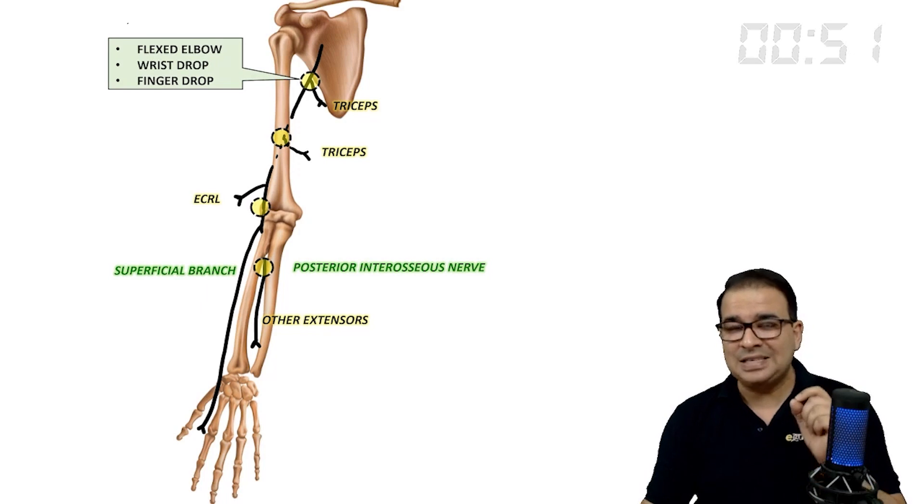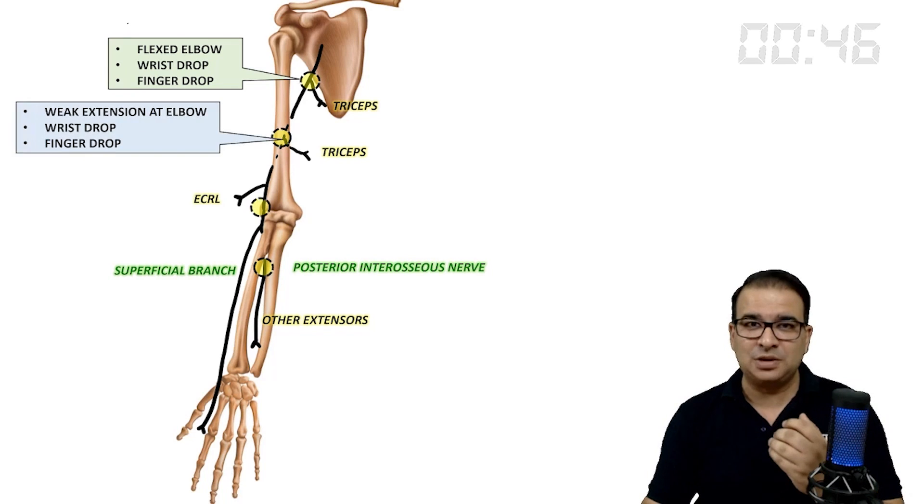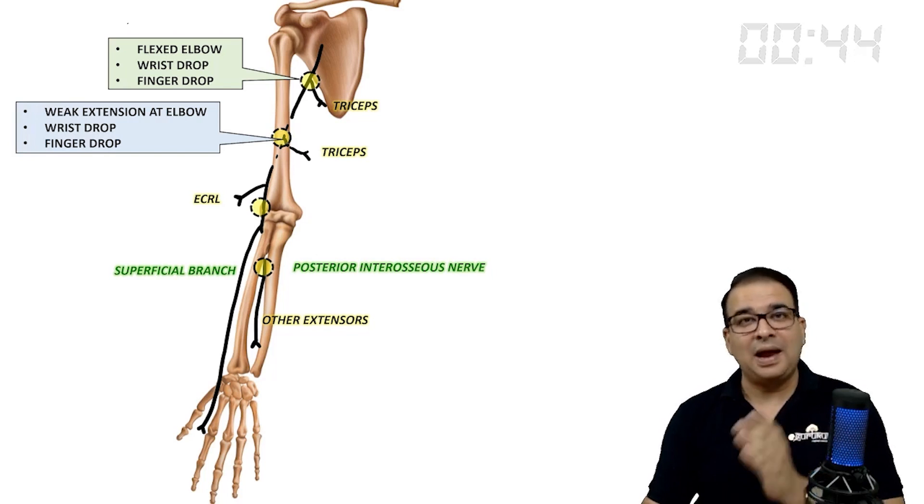If the injury is in the spiral groove, then the tricep is partly involved. Therefore, there will be weakness in elbow extension and we still have the wrist drop and the finger drop.